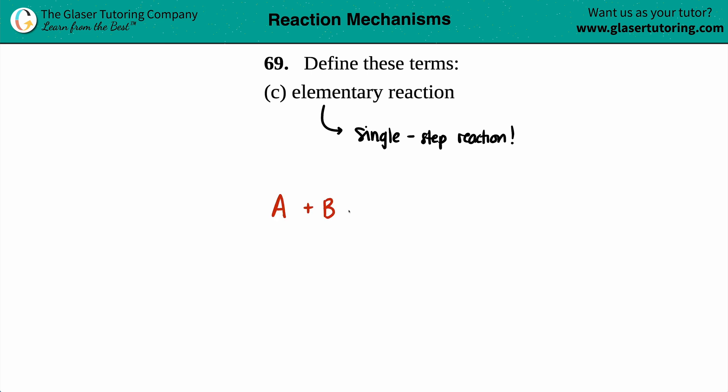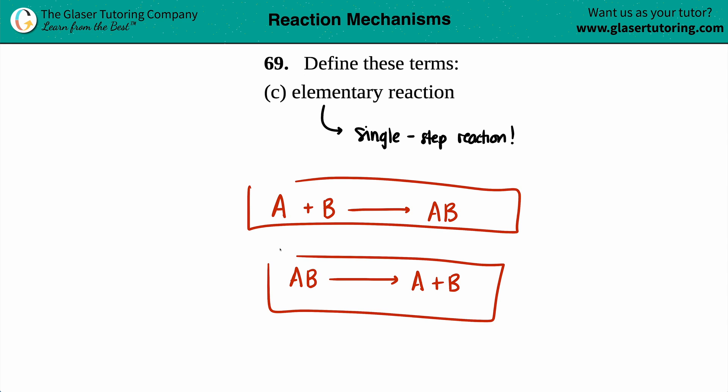So if I write out, you know, A plus B yields AB, and that's all she wrote, right? That's an elementary step. If I wrote AB yields A plus B, and that's all she wrote, that's an elementary step. Anytime that you have just one single individual step, that's an elementary step or an elementary reaction.